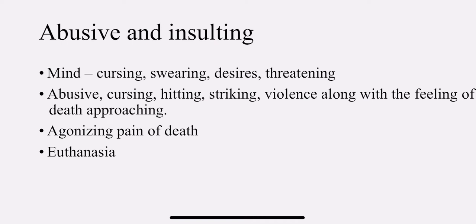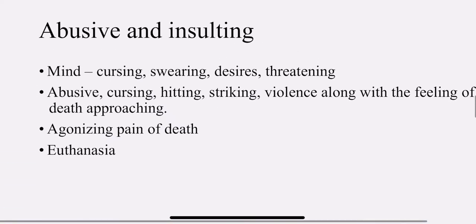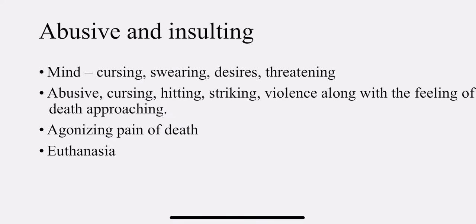Euthanasia — what does euthanasia mean? Euthanasia means voluntary ending of life; you yourself end up the life by your own will. Like there are different types of euthanasia, which you might have read in forensic medicine. Euthanasia is putting an end to the suffering of life — it could be by the doctors or with the will of the patient.